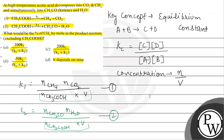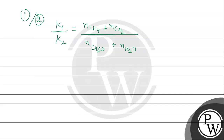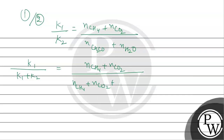We can see the ratio corresponds to K1 divided by K1 plus K2. Here K1 represents the number of moles of CH4 plus the number of moles of CO2, and K2 represents the number of moles of CH2CO plus the number of moles of H2O.